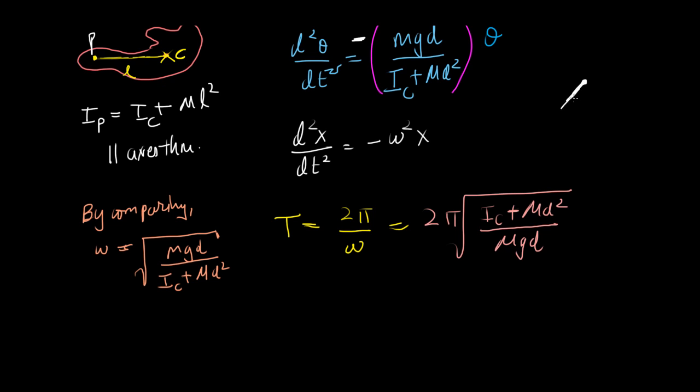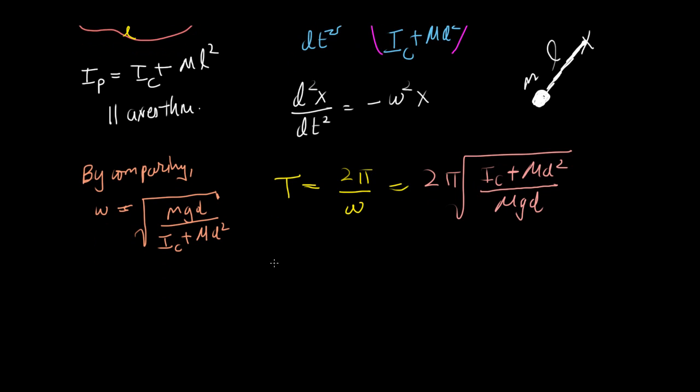If this was a simple pendulum, let's say that is the mass m, that is l. So this is the pivot point, this is the mass. So in this case I'll write it here, in case of a simple pendulum.